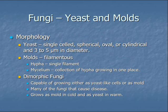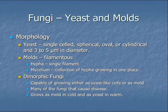Next are fungi — yeast and mold. Some fungi are capable of growing as either. Starting with yeast: these are single-celled, spherical, oval, or cylindrical — three to five micrometers in diameter. The symbol for micro means this is one-thousandth of a millimeter, so a micrometer is a lot smaller than a millimeter.